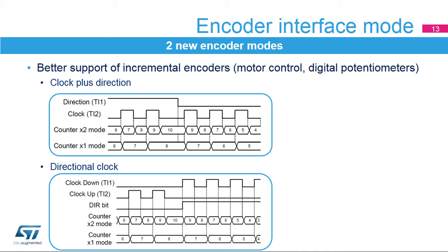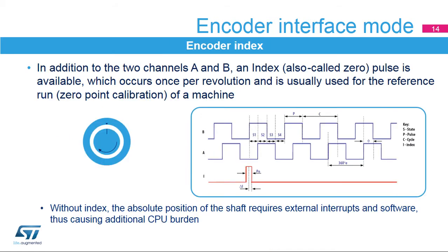In addition to quadrature encoder mode, the timer supports two other encoder types. In clock-plus-direction mode, the clock is provided on a single line on TI2 while the direction is forced using the TI1 input. In directional clock mode, clocks are provided on two lines with a single one active at a time depending on direction, so there is one up-counting clock line and one down-counting clock line.